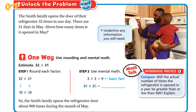There are 31 days in May. About how many times is it opened in May? Underline any information you will need. The Smith family opens the door 32 times in one day and there are 31 days in May. When you see the word 'about,' that means we will estimate.